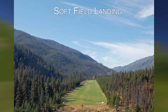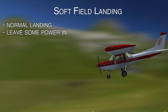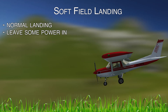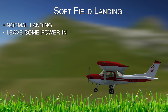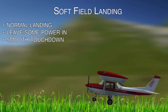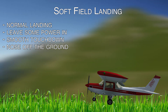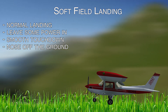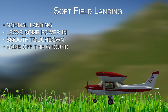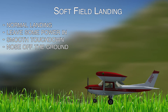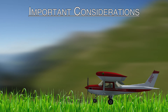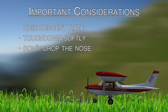A soft field landing is basically a normal landing, except you leave a little bit of power in so that you can slowly transition to the landing. Leave a little bit of power in during the flare, slowly touch down, and as you start slowing down, add more aft back pressure to keep the nose off the ground. You probably won't need any brakes on a soft field because there's so much drag from the grass or whatever you landed on, and you might even need to add power to continue rolling down the landing strip. Make sure you don't have an excessive descent rate coming down, and don't touch down hard or drop the nose after you land.